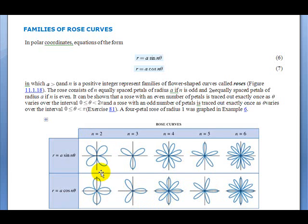The other determining factor in how the graph is going to look is whether it's sine or cosine. As usual, cosine is symmetric across the X axis. The sine roses are symmetric across the Y axis.